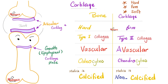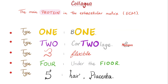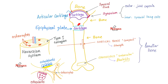The main cells of the bones are osteocytes; the main cells of the cartilages are chondrocytes. Type 1 collagen is found in bone and type 2 is in cartilage. Which collagen type is stronger? Type 1, of course. Here's the bone, here's the epiphyseal cartilage plate or growth plate, and here's the articular cartilage to make a joint. The discussion on the Haversian system is coming soon to my biology playlist.